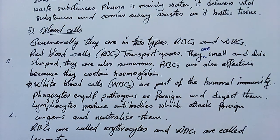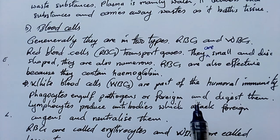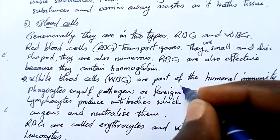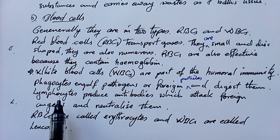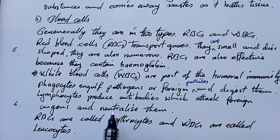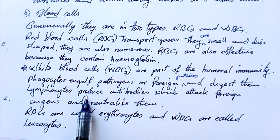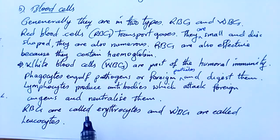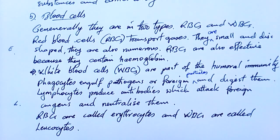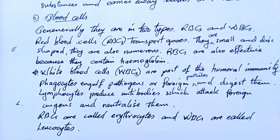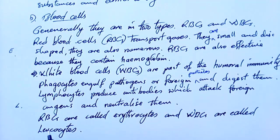White blood cells are part of the humoral immunity. Phagocytes engulf foreign particles and digest them, while lymphocytes produce antibodies which attack foreign antigens and neutralize them. Phagocytes are made in the white bone marrow, and lymphocytes are made in the lymph nodes of the lymphatic system. RBCs are called erythrocytes and WBCs are called leukocytes.